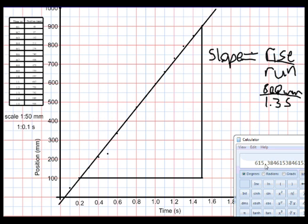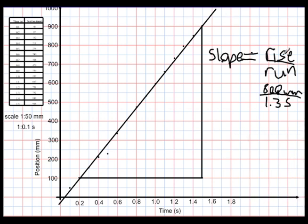620. And what would our units be? Our units would be millimeters per second. Now, to convert that to meters per second in order to get it into standard SI units, that would be 0.062 meters per second. That's the slope. And that should give you a bit of a hint in terms of what the slope means.